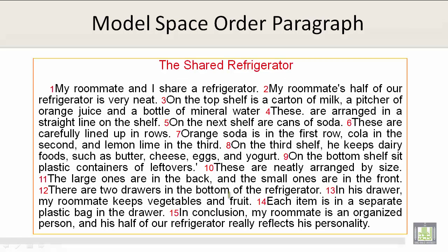The Shared Refrigerator. My roommate and I share a refrigerator. My roommate's half of our refrigerator is very neat. On the top shelf is a carton of milk, a pitcher of orange juice, and a bottle of mineral water. These are arranged in a straight line on the shelf. On the next shelf are cans of soda. These are carefully lined up in rows.